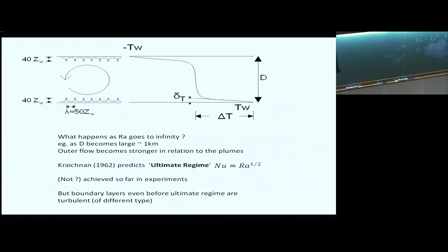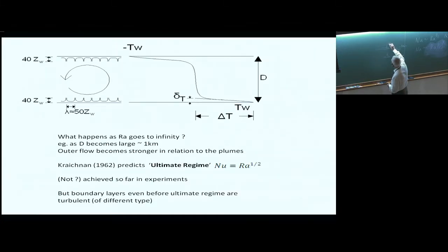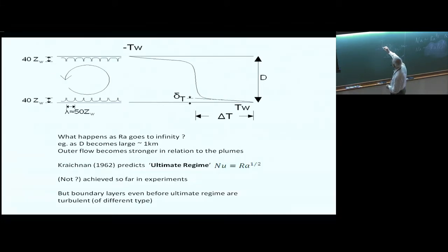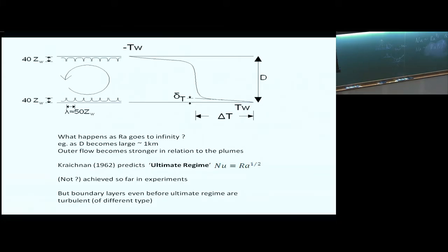Howard's theory was essentially temporal: he said the conduction layer grows with time, and when the thickness equals the critical thickness, a plume or thermal erupts from the plate. In fact, in the original Sparrow thymol-blue experiment, they observed this periodic eruption of thermals. Under certain conditions you get periodic eruption, and under certain conditions you get more like sheet plumes. Which regime occurs also depends on Prandtl number.